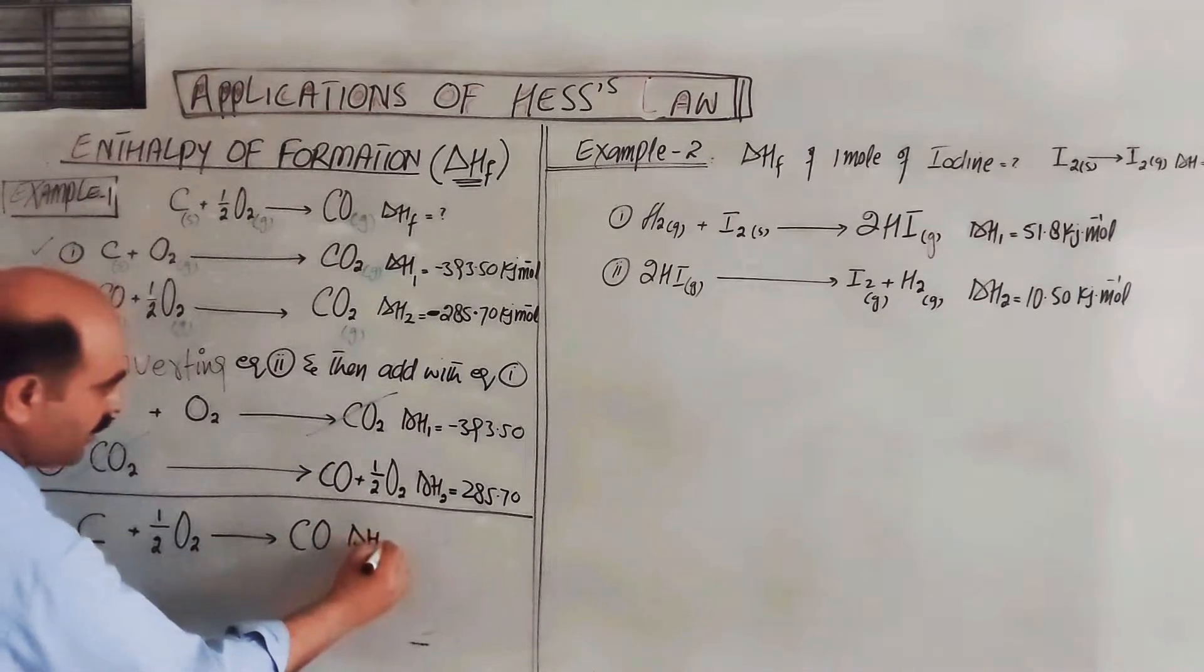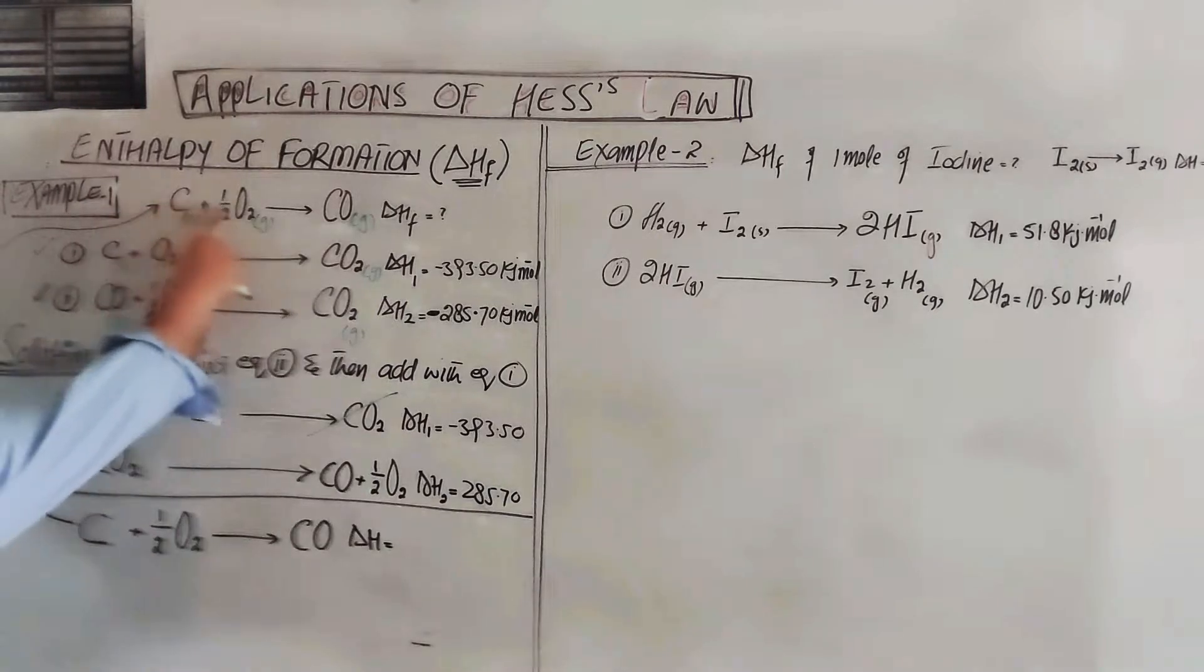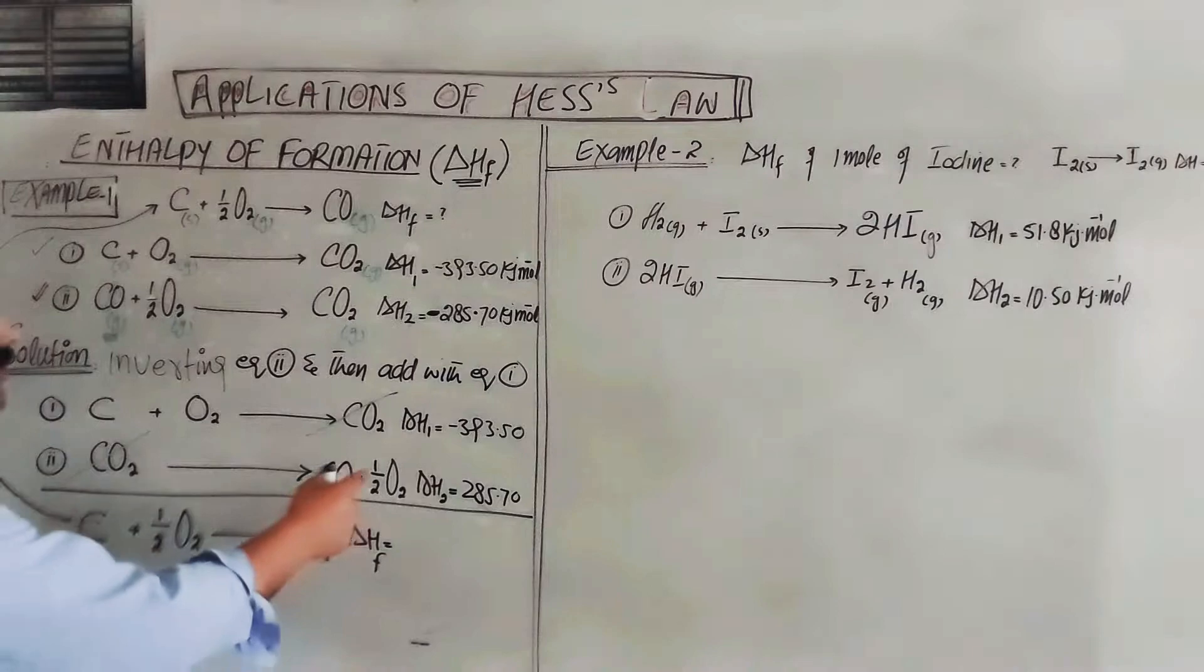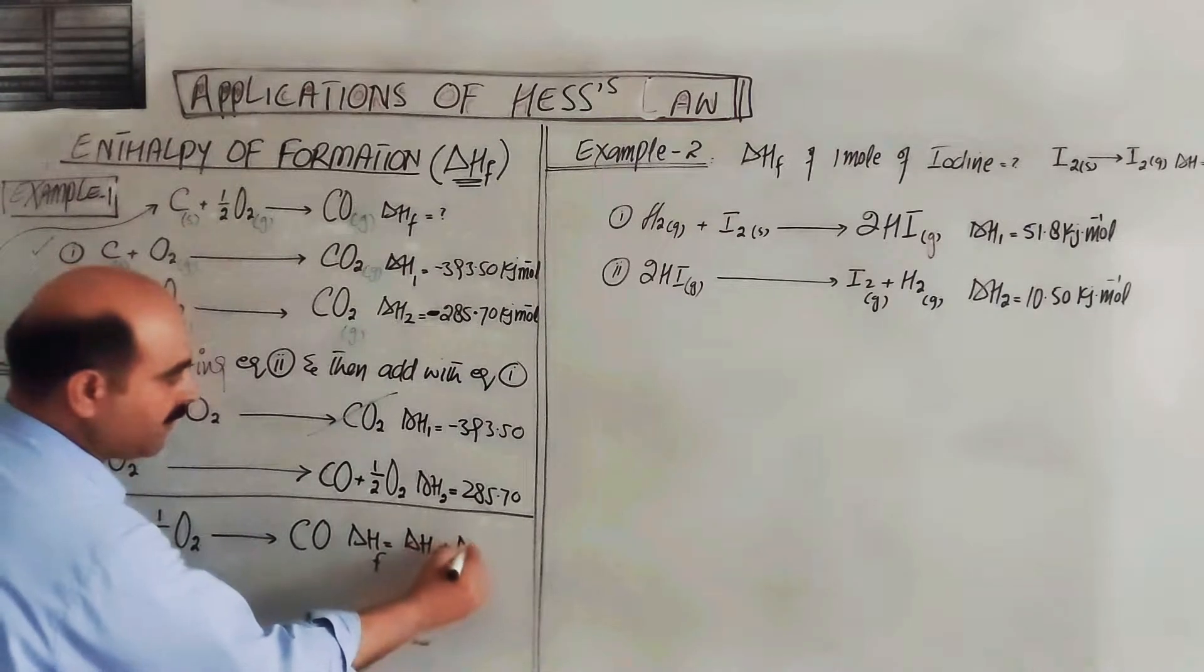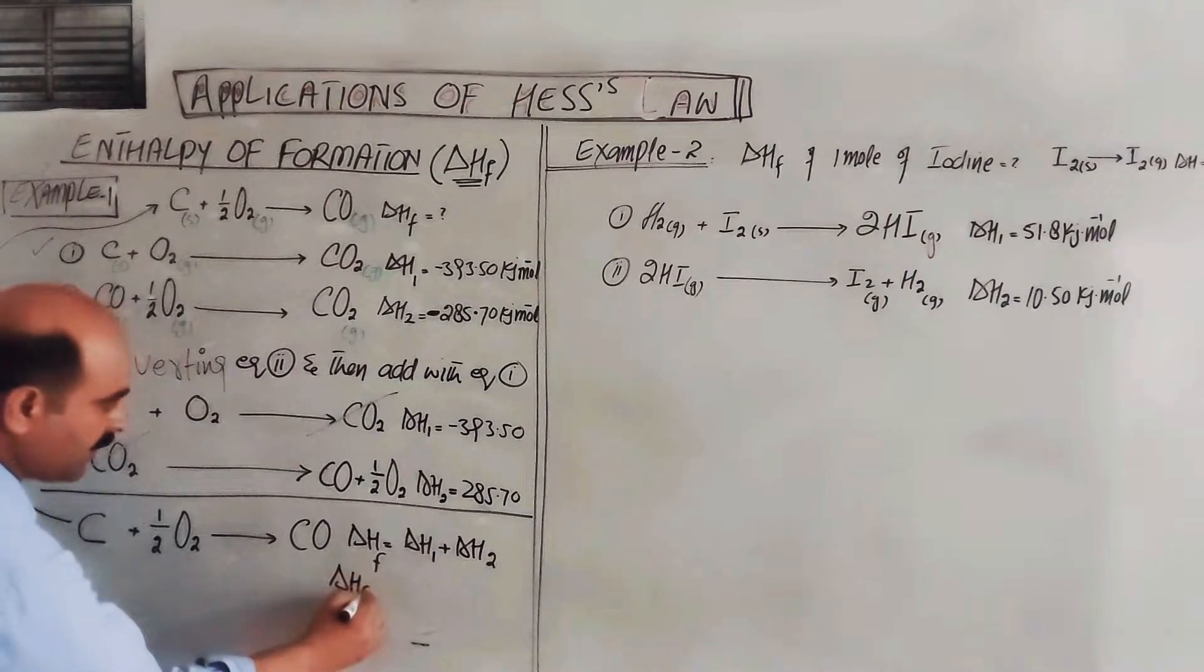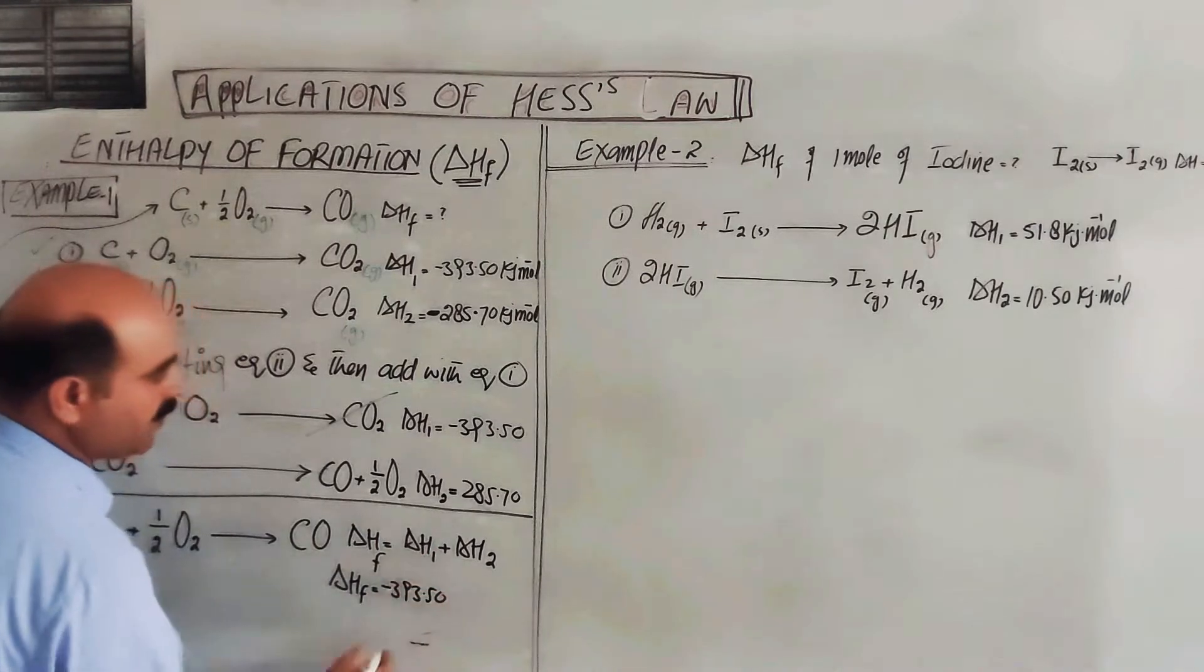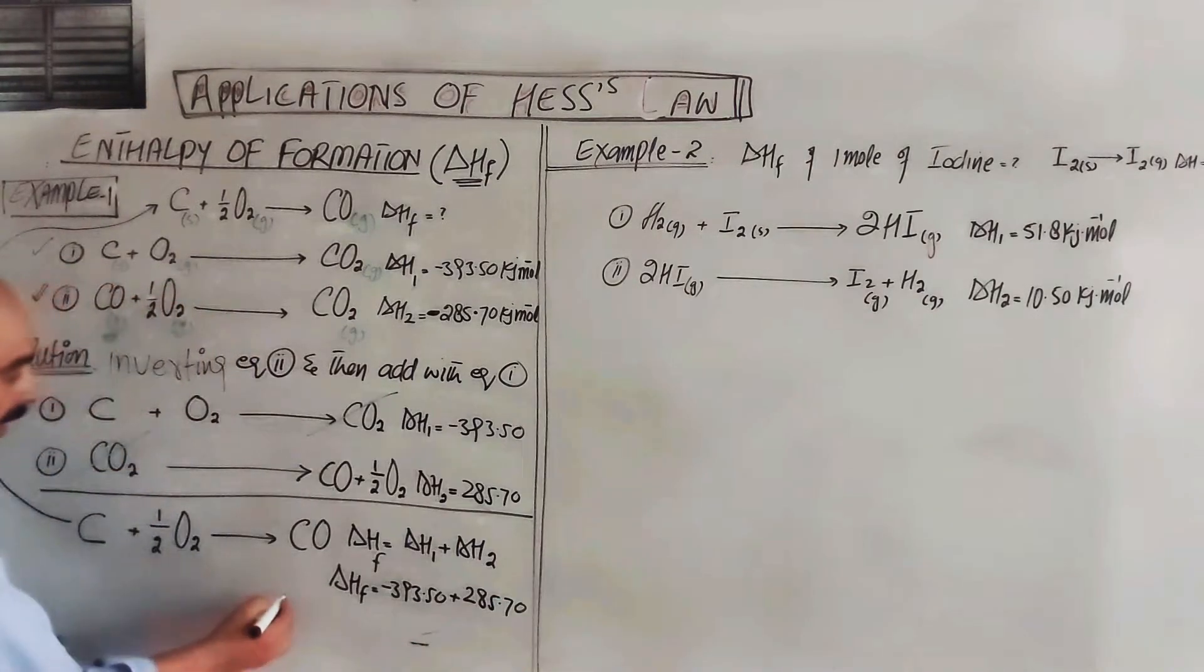Net reaction: carbon plus one mole oxygen minus half mole gives difference of half mole. Automatically half mole oxygen remains. Physical state also remains. On the right side we have carbon monoxide. Delta H - this is exactly the required reaction that we want. Now delta H formation can be determined with the help of these two equations. The enthalpy change in several steps - the summation - delta H equals delta H1 plus delta H2.